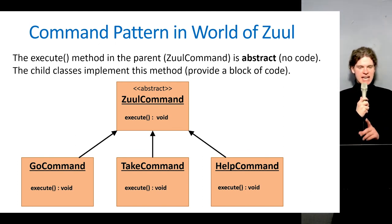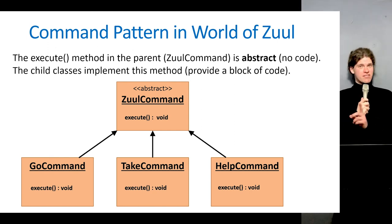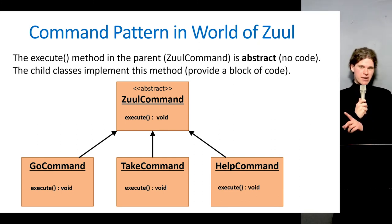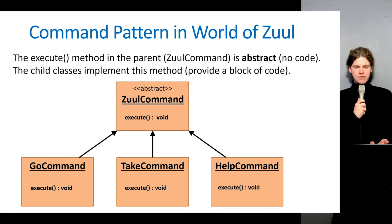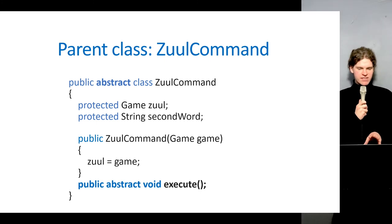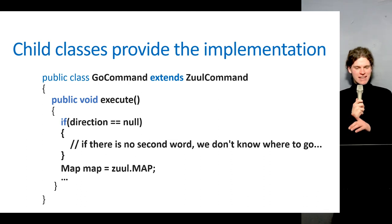The execute method is declared abstract in the ZoolCommand parent class, so it has no implementation — there's no method body, just a semicolon at the end of the signature. The children classes then provide the body and block of code for that execute method. Coming back to ZoolCommand, you'll notice there's no body in that execute method — just a semicolon — and it's then up to the children, like GoCommand, to provide the implementation.